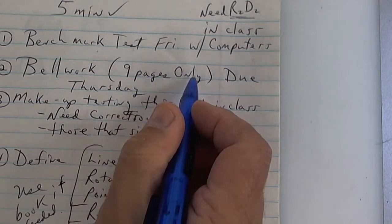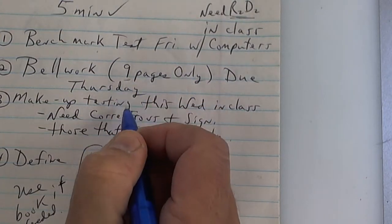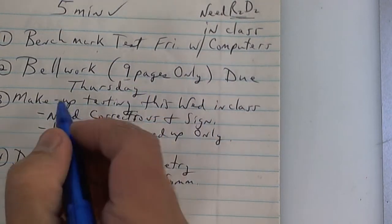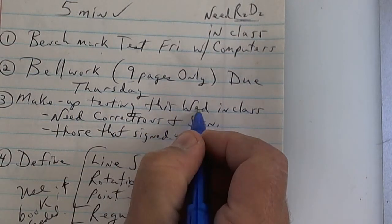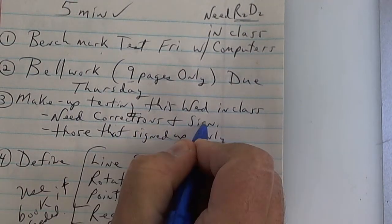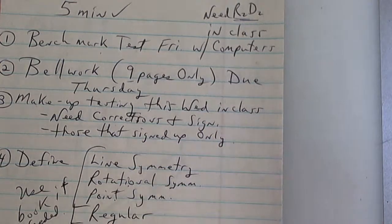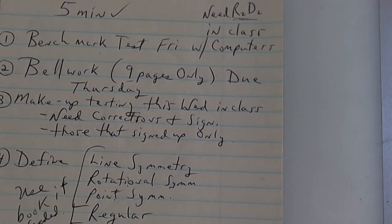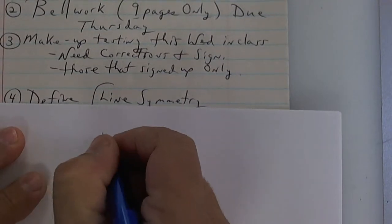Bell work nine pages, only one per week. If you have to rewrite it, rewrite it. Makeup testing is this Wednesday. You need corrections and a signature, only those kids that already signed up from last week.